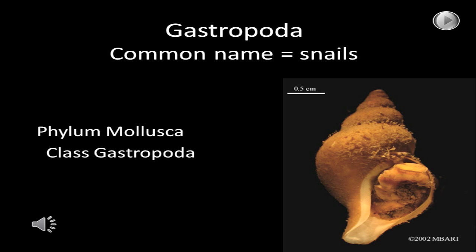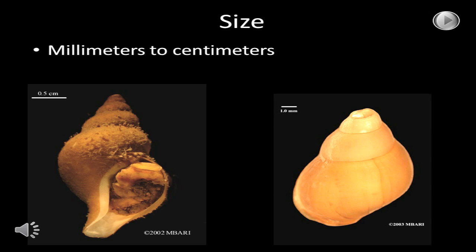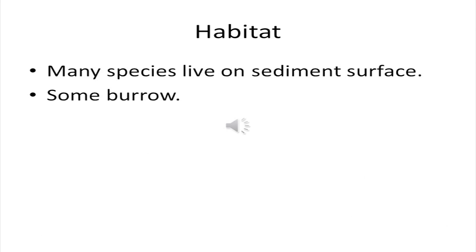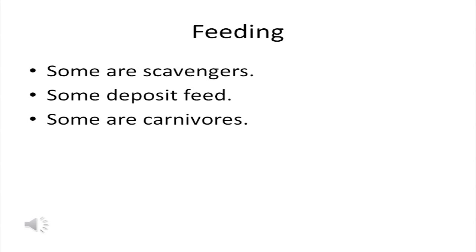The next macrofaunal group is the Gastropoda — the snails. They are a class in the phylum Mollusca. Gastropods can be millimeters to centimeters in body length. They have a calcium carbonate shell, a head that carries two tentacles and a mouth, a radula (a ribbon-like toothed structure used in feeding), and a muscular foot. Many species live on the sediment surface; some burrow. To move, they make a rippling motion of their foot. Some gastropods are scavengers, some are deposit feeders, and some are carnivores.